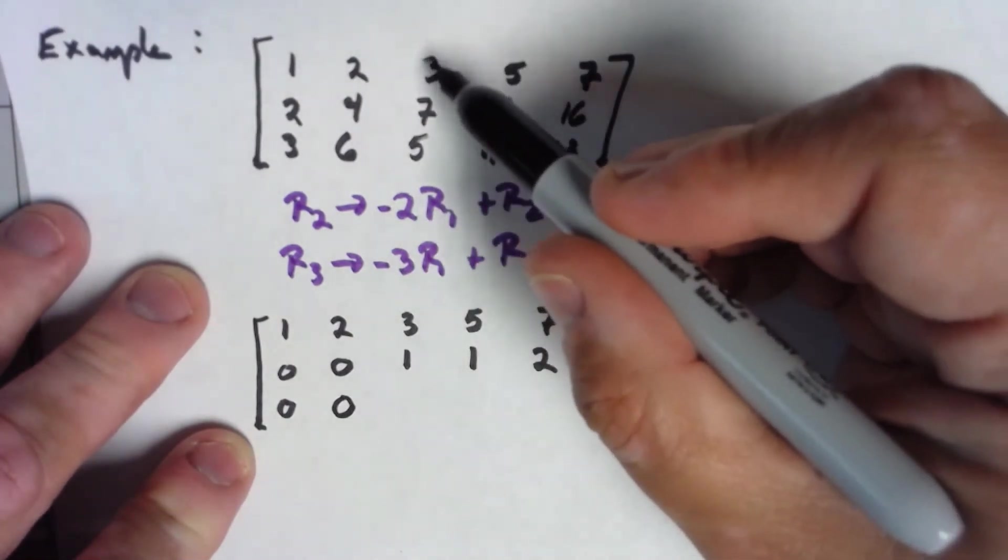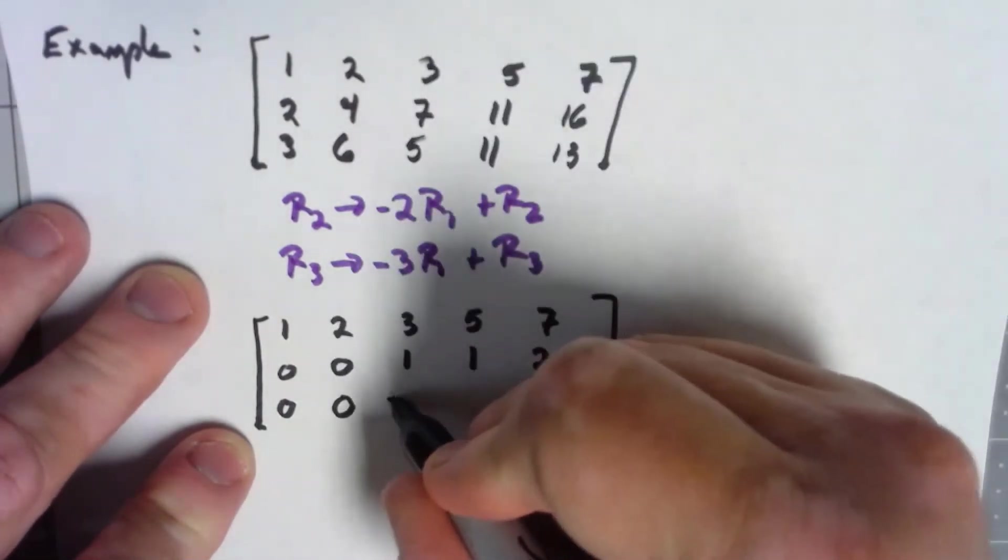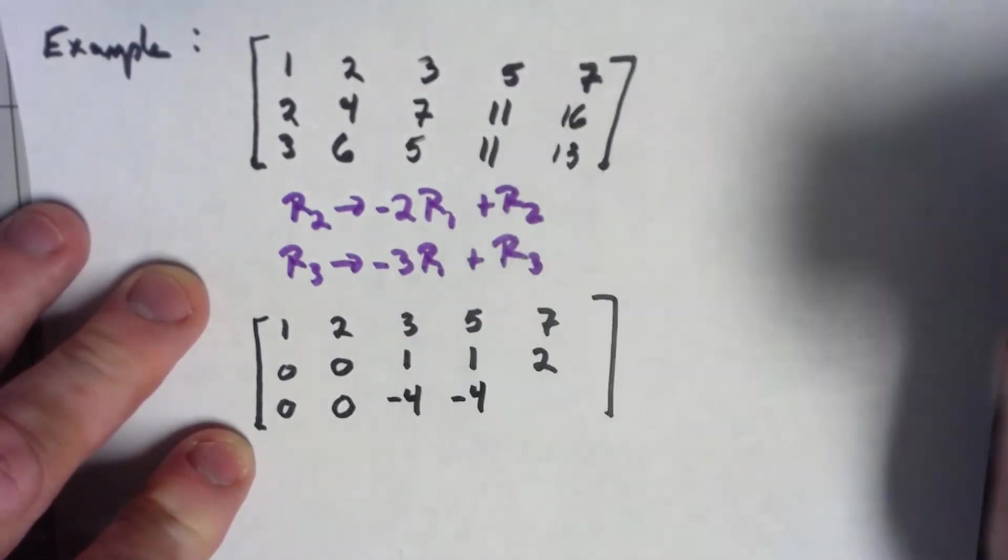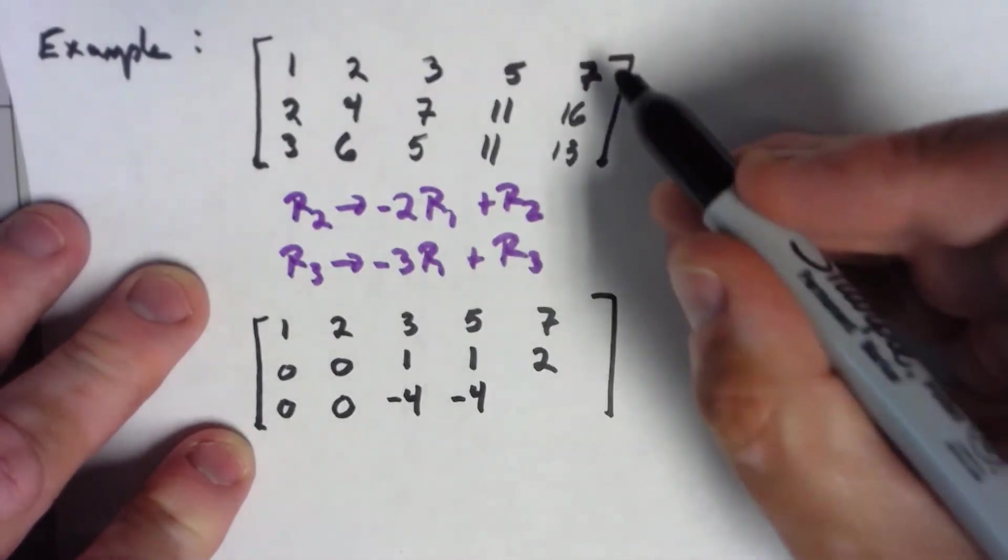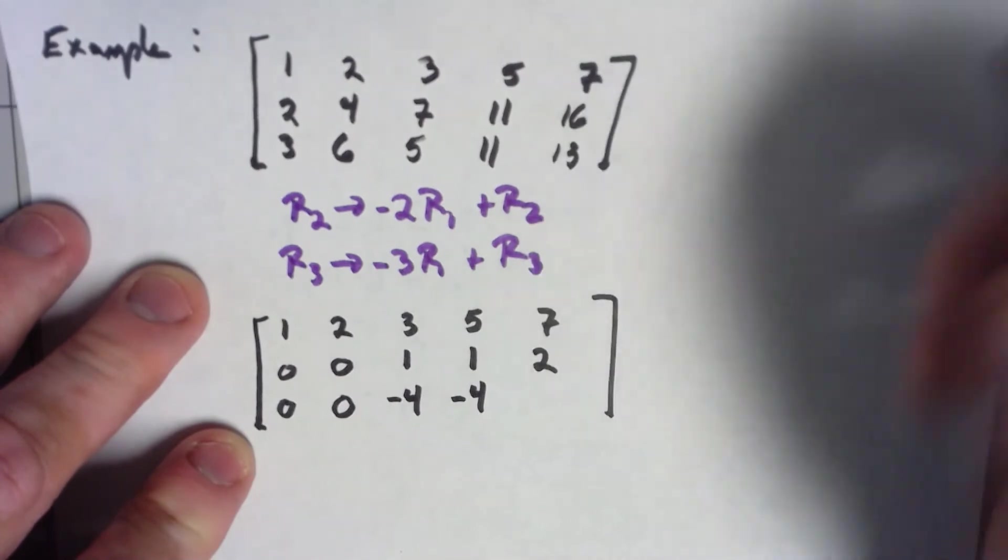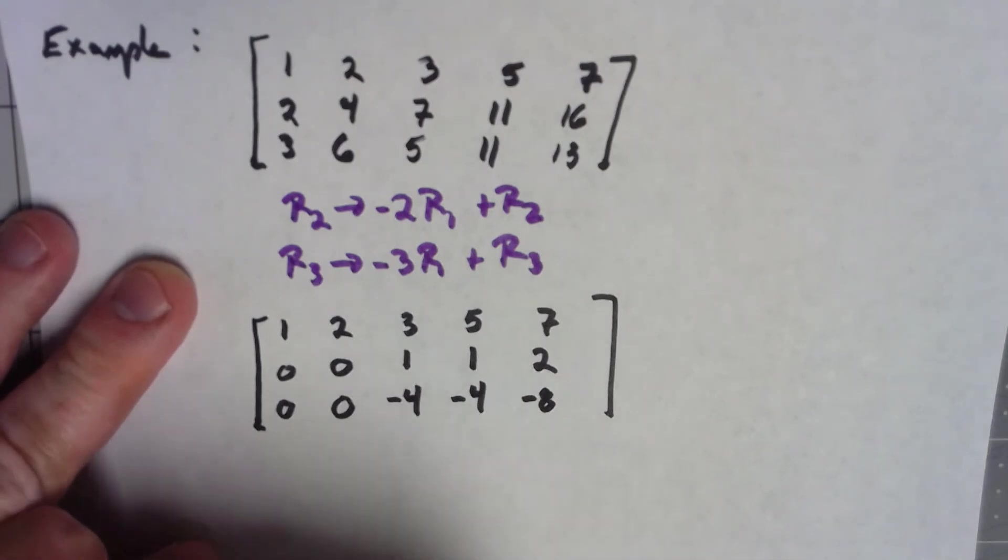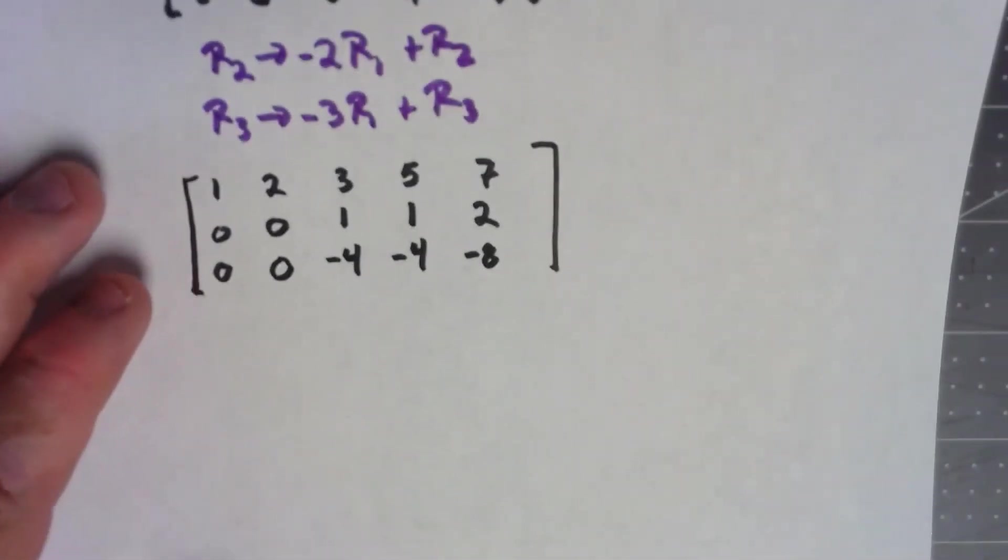Negative 3 times 2 added to 6 is 0. Negative 3 times 3 is negative 9 added to 5 is negative 4. Negative 15 added to 11 is negative 4. Negative 21 added to negative 13 is negative 8.